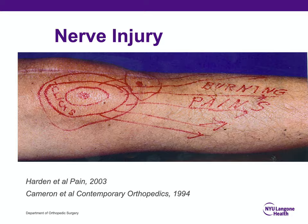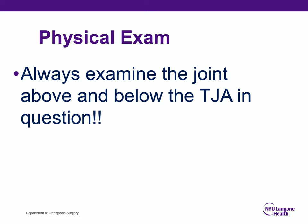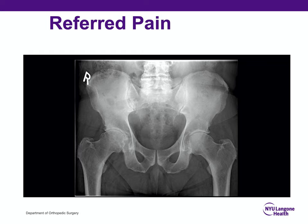We always need to examine the joint above and below in a total joint arthroplasty question. This is the hip x-ray of a patient who had a knee revision and got no relief because the source of pain was from the hip. This may appear on the boards with descriptions of pain with gentle rotation of the leg or log rolling, stiffness that restricts the ability to tie shoes and socks, or other factors indicating that further evaluation of the hip is needed rather than knee revision.